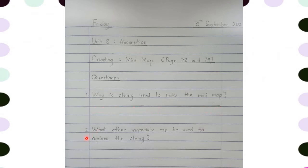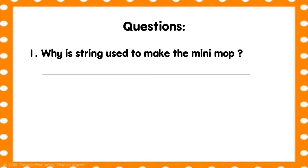And then question number two: what other materials can be used to replace the string? Make sure there's a space for you to write down your answer. Please make sure that your handwriting is neat and legible. There are two questions that you need to copy in your exercise book.